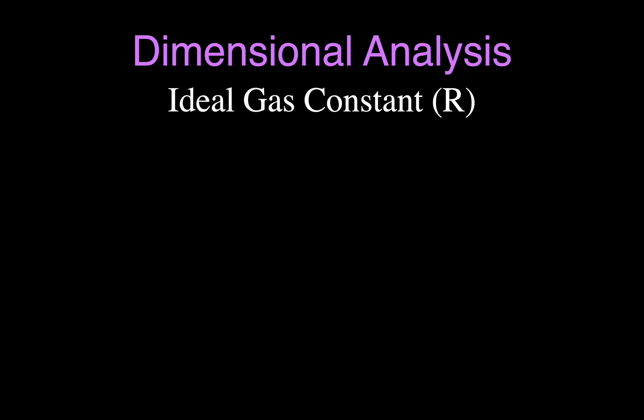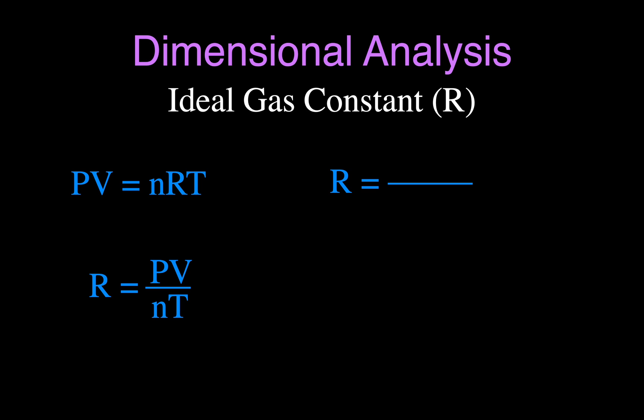For number four, we're doing the ideal gas constant R. We'll use PV = nRT, where R is the constant we want units for. Solving for R gives PV divided by nT — that's pressure times volume divided by the number of moles times temperature. Pressure can be measured in atmospheres, volume in liters, n in moles, and temperature in Kelvin. So the units for R are atm·L/(mol·K). There are other forms of the ideal gas constant, but those are the units for this version.